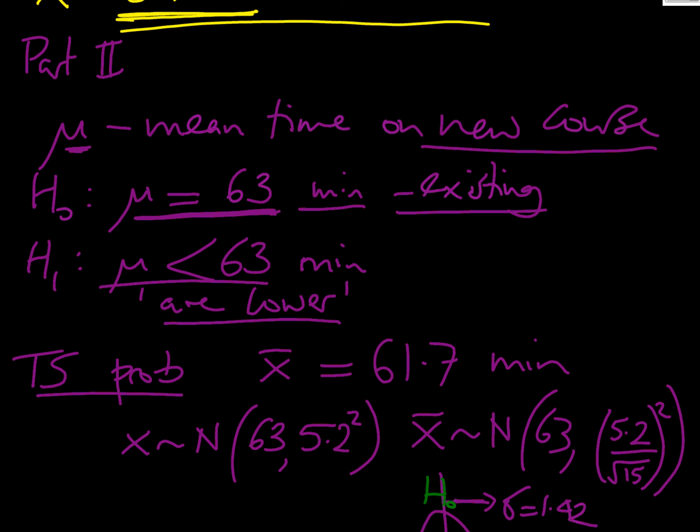Our test statistic, we had a sample with a mean of 61.7 minutes. So that's going to be our X bar. We're going to calculate our probabilities to look at our test statistic. Given we're working with a status quo, the distribution of our individual riders times will be normally distributed with a mean of 63, standard deviation of 5.2. But we've got here a sample of 61.7 of 15 riders. So the distribution of the sample is going to be normal with a mean of 63, but with a standard deviation of sigma of the population over root n. So that's 5.2 over the root of 15. That standard deviation for our sample means is 1.42.